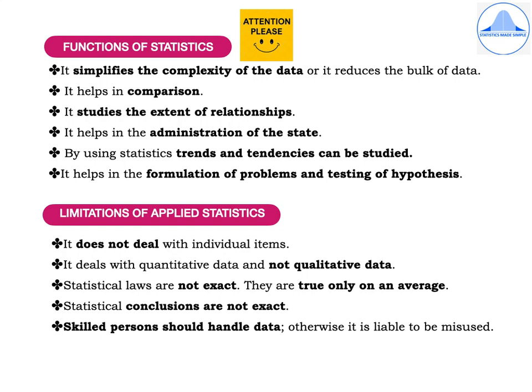There are also some limitations of applied statistics. It does not deal with individual items. It deals with quantitative data and not qualitative data. Statistical laws are always not exact — they are true only on an average. Statistical conclusions are also not always exact. And a skilled person should handle data, otherwise it is liable to be misused.